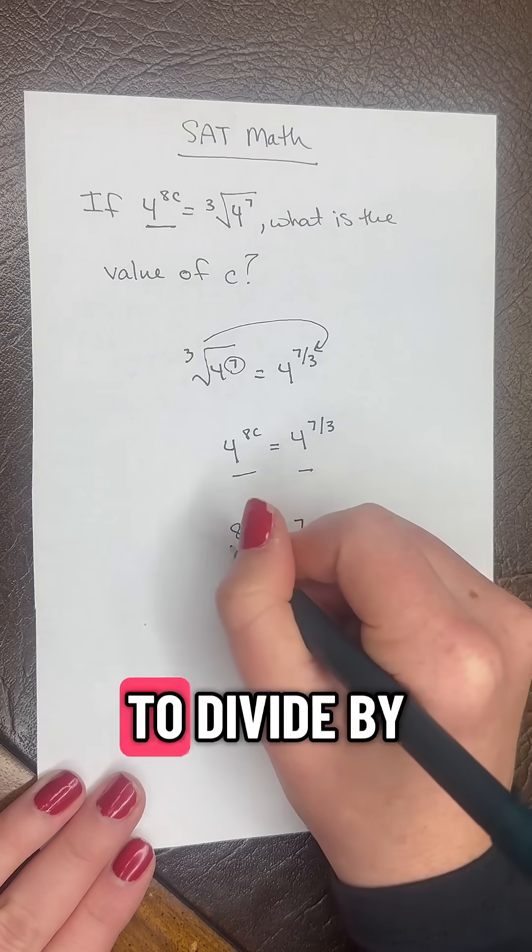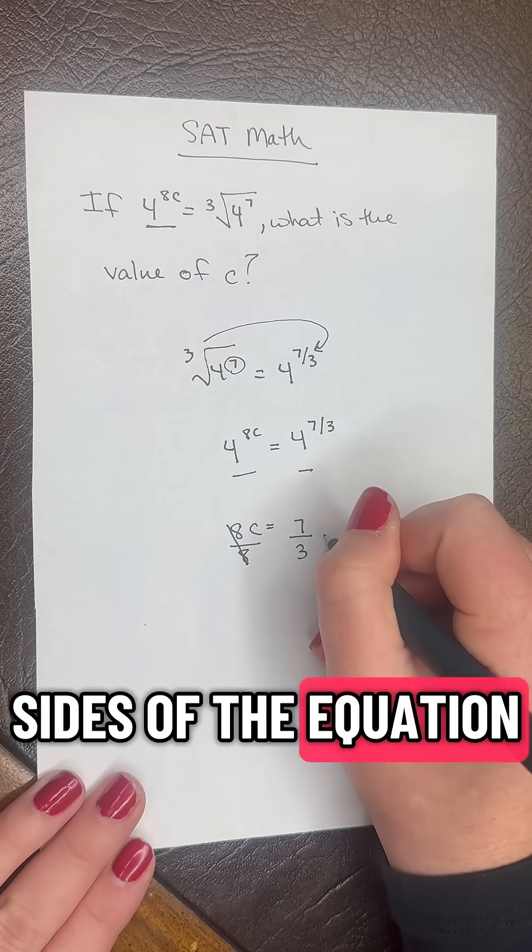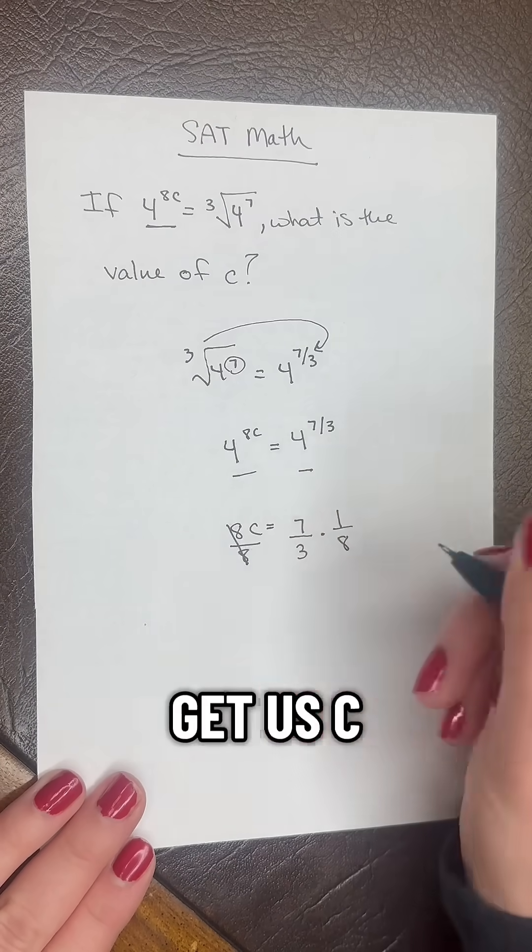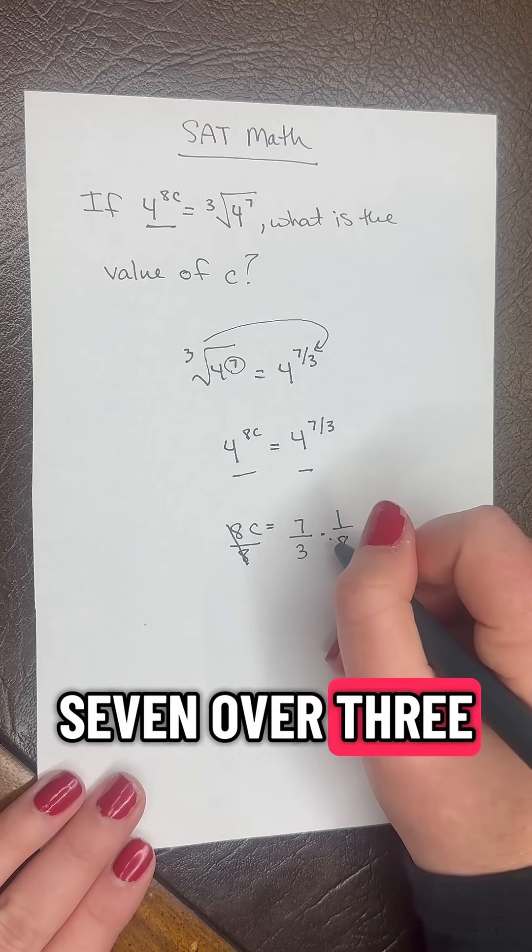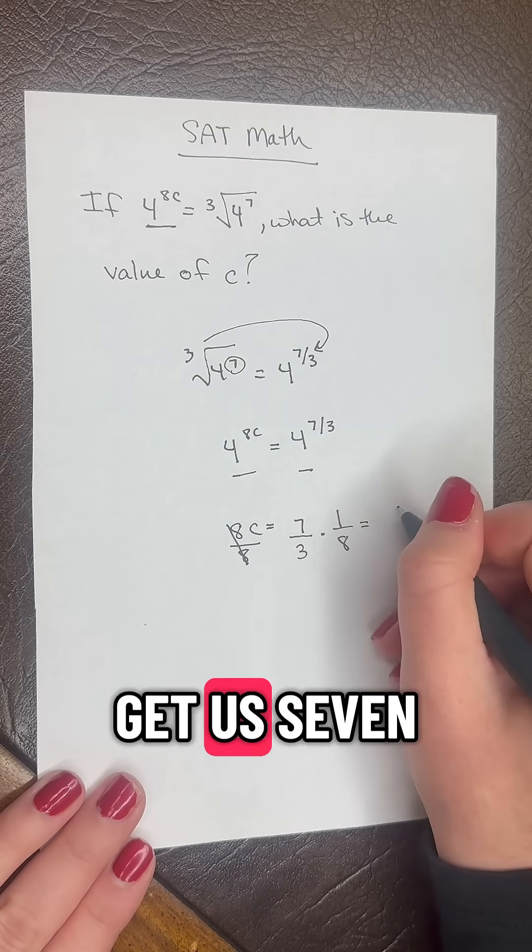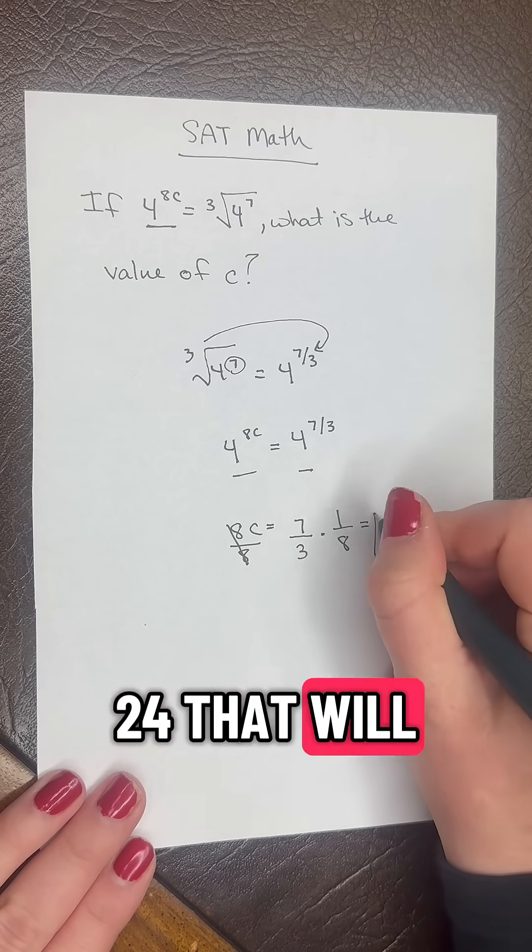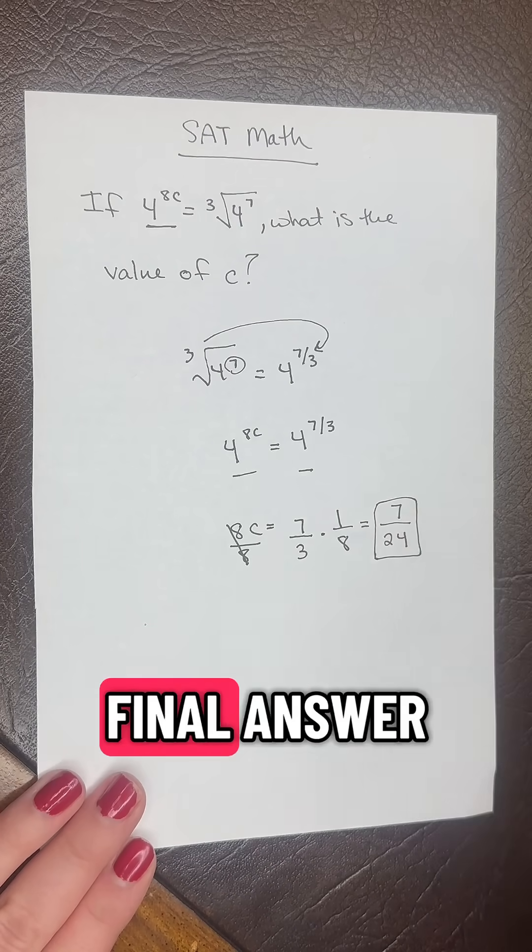Now we need to divide by 8 on both sides of the equation. So that's like multiplying by 1 over 8 and that will get us c. So we have 7 over 3 times 1 over 8 and that will get us 7 over 3 times 8 is 24. That will be our c value which is our final answer.